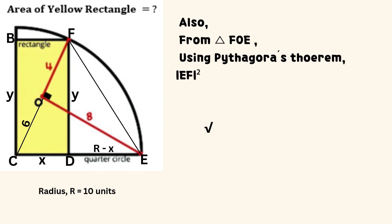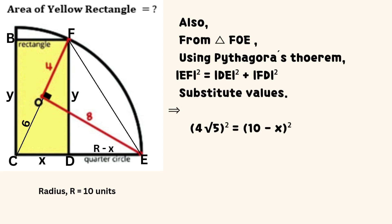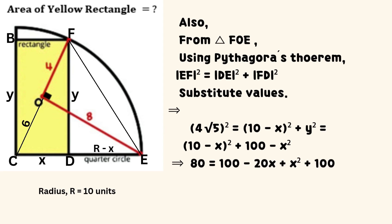Also from the same triangle FOE, using Pythagoras theorem, the square of line EF equals the sum of the square of line DE and the square of line FD. Substitute values: the square of (4 times the square root of 5) equals the sum of the square of (10 minus X) and the square of Y. It follows that 80 equals 100 minus 20 times X plus the square of X plus 100 minus the square of X.